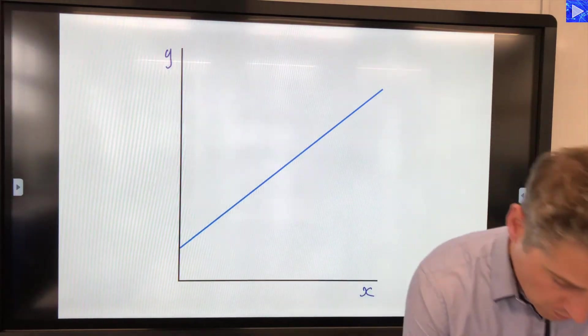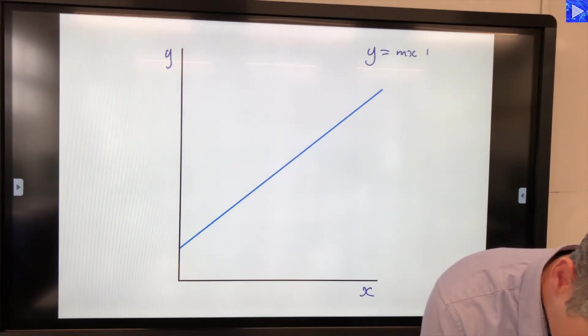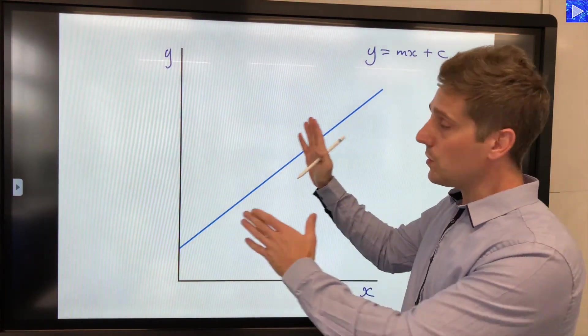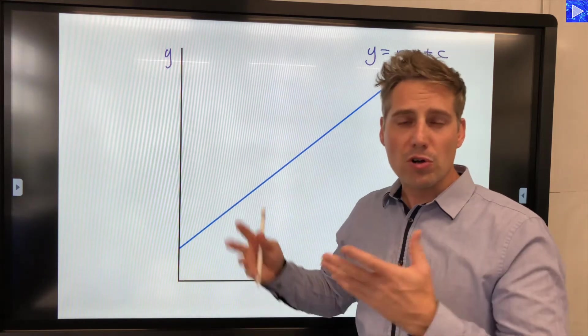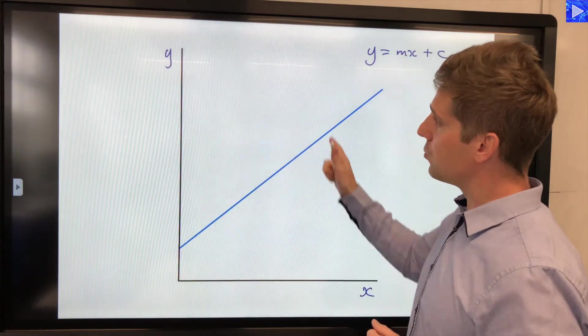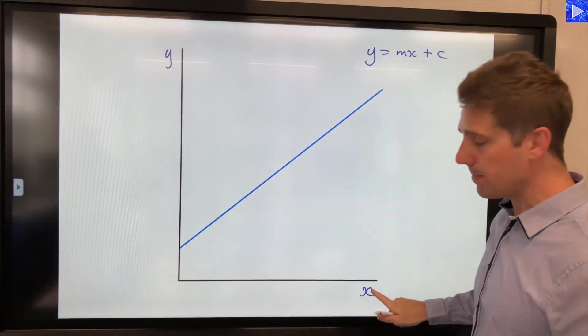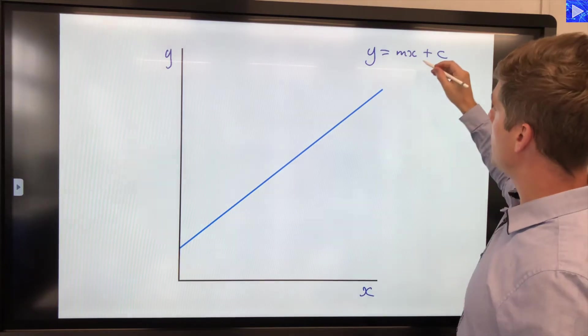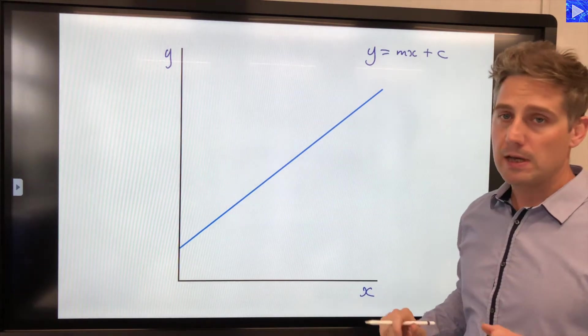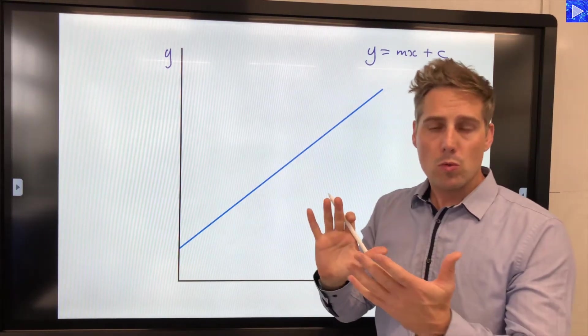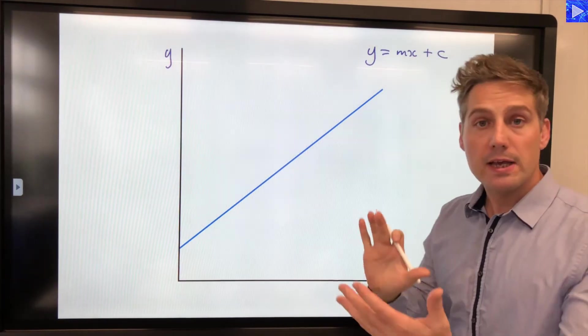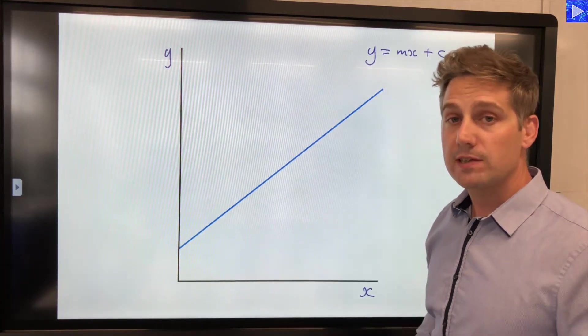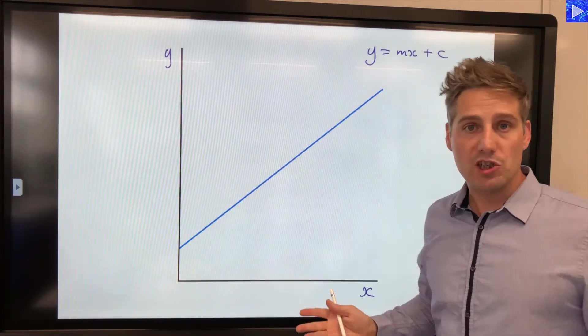So we've got y equals mx plus c. You'll have an equation. One of the variables or some product of a variable will be plotted on the y axis and another will be plotted on the x axis. And so that tells you what the y variable is and what the x variable is. From that you can then work out whatever is multiplied by the x variable is equal to your gradient. And then whatever is added or subtracted is equal to your y-intercept.